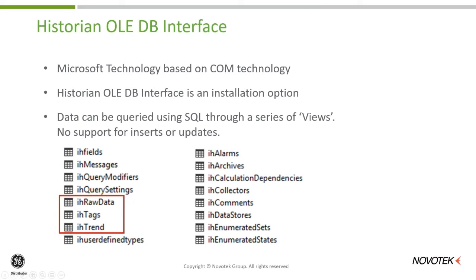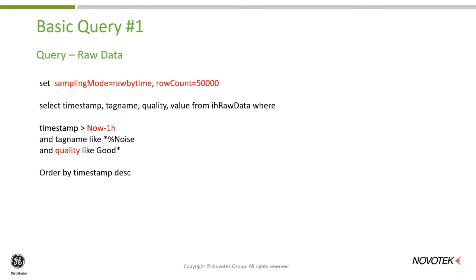Looking at a simple example — recovering raw data from historian. The query looks very much like an SQL query but with a few extra features. There's a concept called a sampling mode: in this case, I want raw data by time, not interpolated — the actual data points stored in historian. Alternatively, I could retrieve data by count, say the last 100 values. There's also a limit on the amount of data to bring back — here, no more than 50,000 rows.